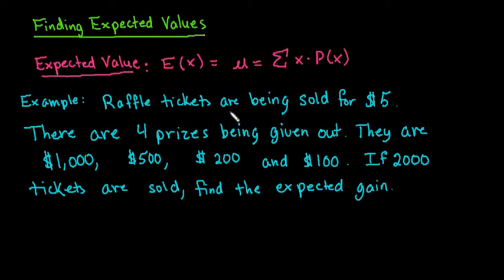Hi, for this video we're going to look at finding the expected values of a probability distribution. The expected value is equal to the mean. Anytime they're asking you for the expected value, it's just the mean that you would expect to see come through. The mean is equal to the sum of all of our individual x values times the probability of those values.